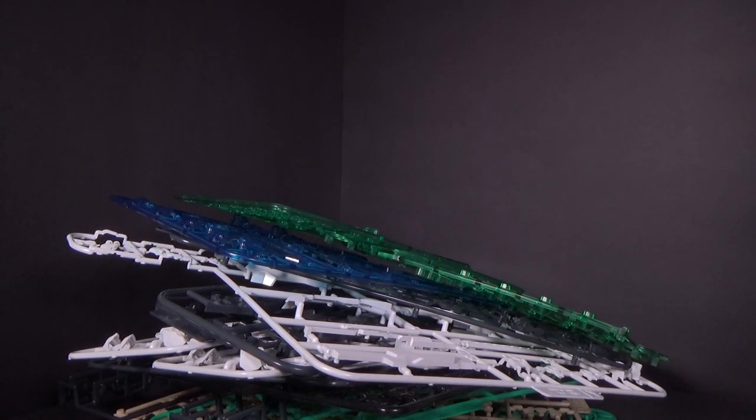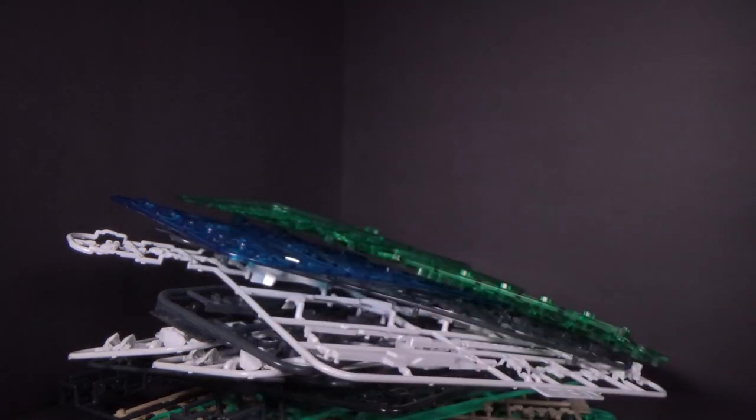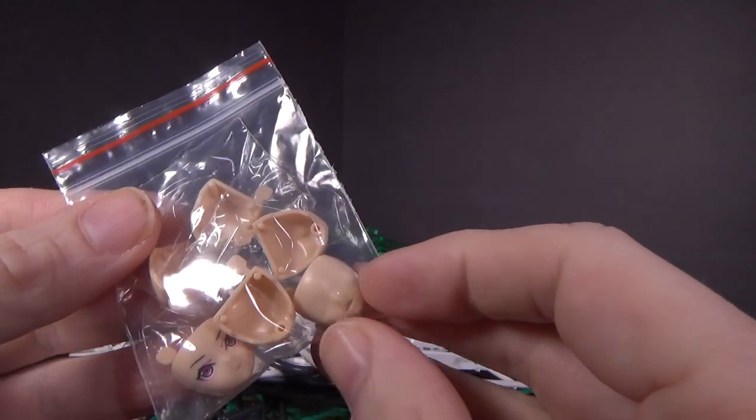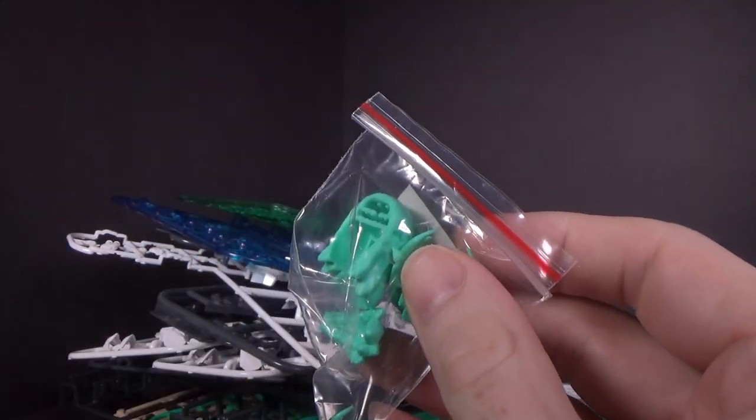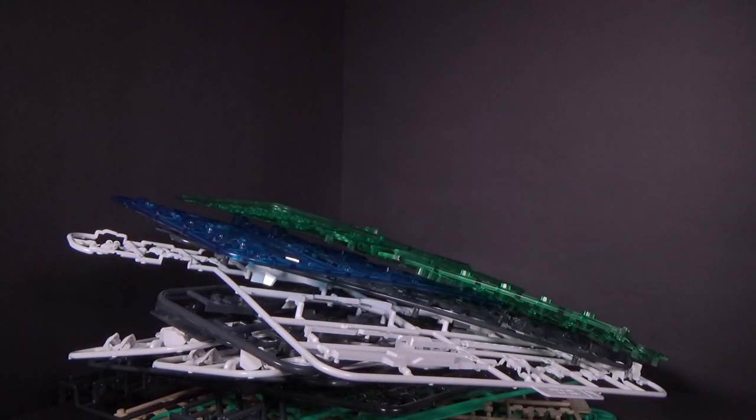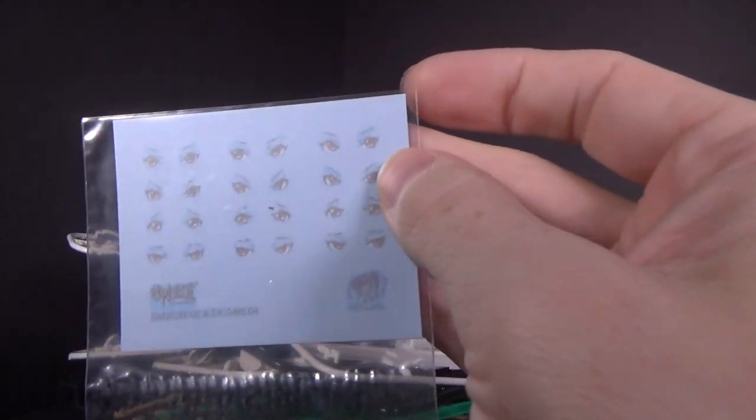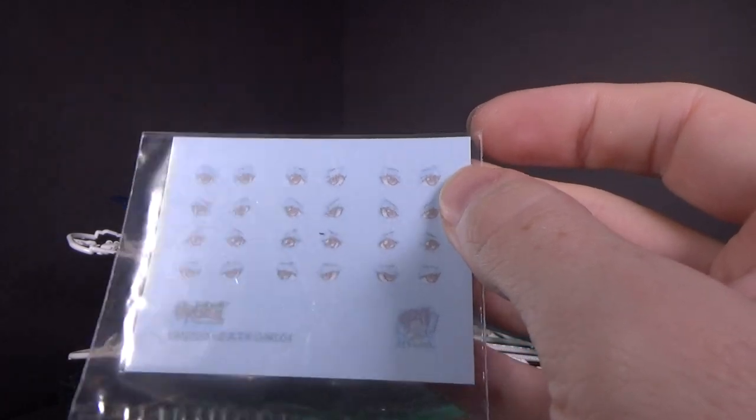And then we do have a lot of little baggies of little pieces, like we got the hands in one, we got the faces in the other, we got some hair, and then we got some more hair and more hands. And then we got waterslide faces, if you want to use different ones.